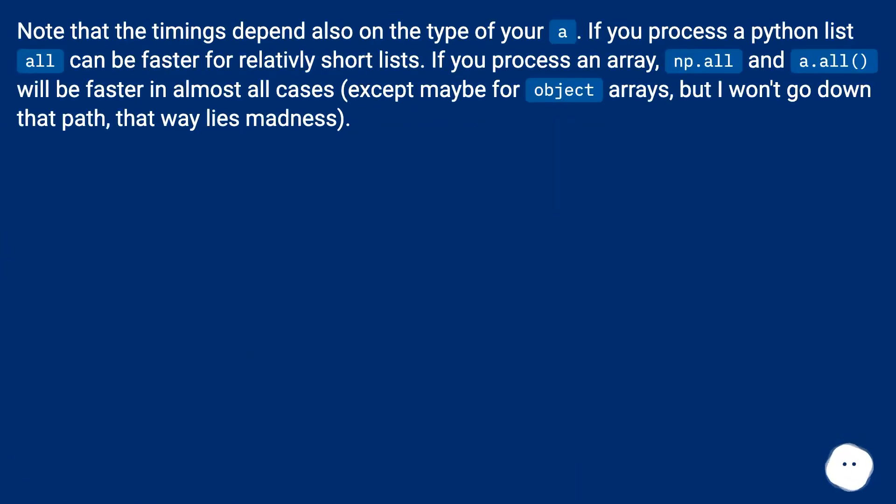Note that the timings depend also on the type of your a. If you process a Python list, all can be faster for relatively short lists. If you process an array, np.all and a.all will be faster in almost all cases, except maybe for object arrays, but I won't go down that path, that way lies madness.